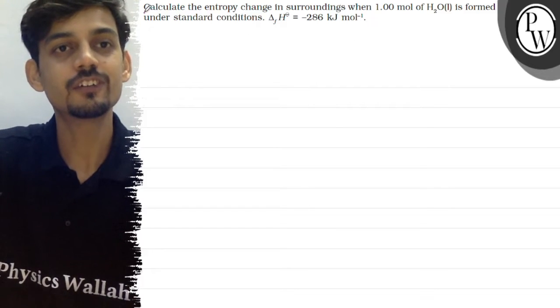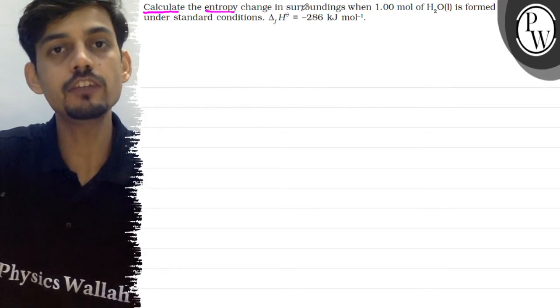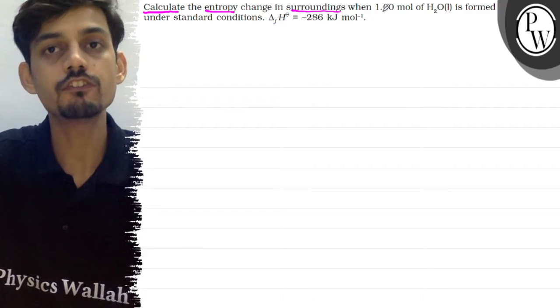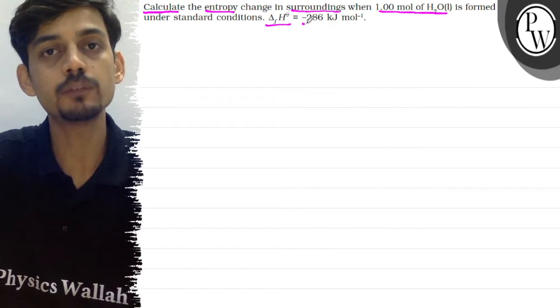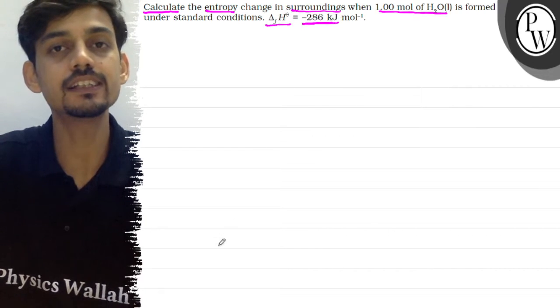Hello, the question says: Calculate the entropy change in surroundings when one mole of H2O liquid is formed under standard conditions. Delta H formation is given as minus 286 kilojoules per mole.